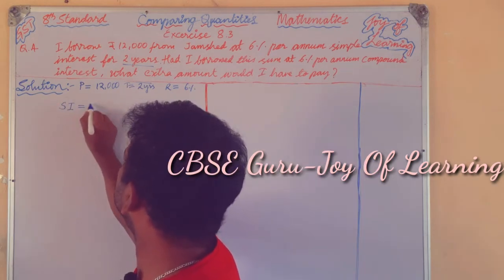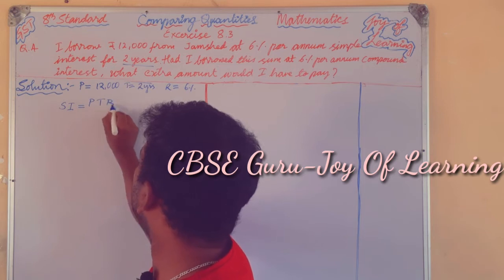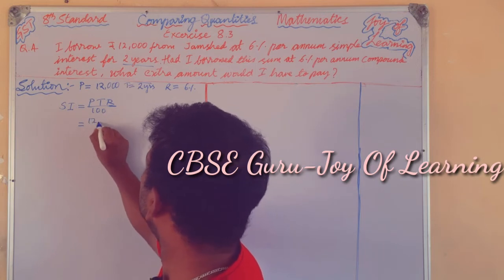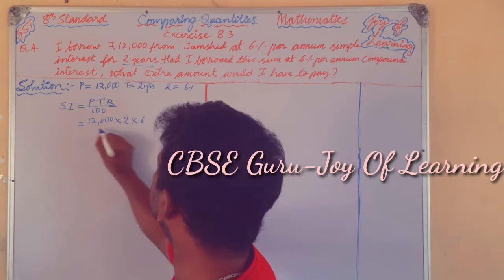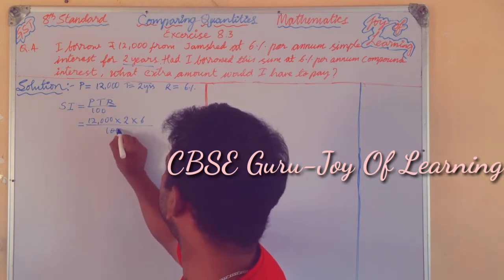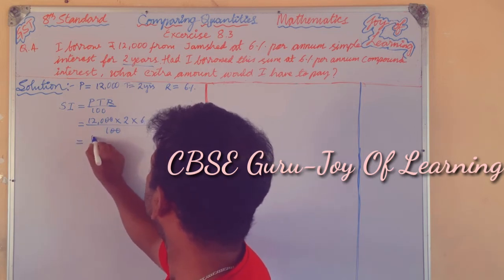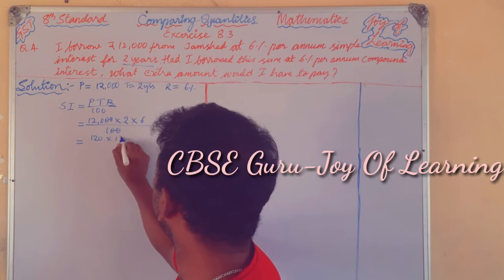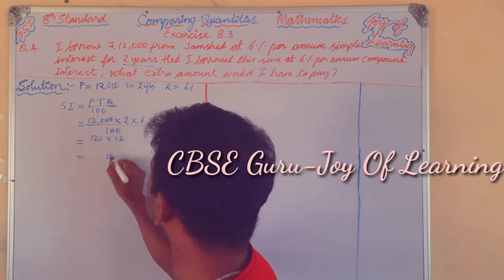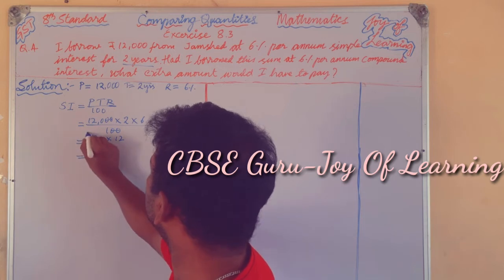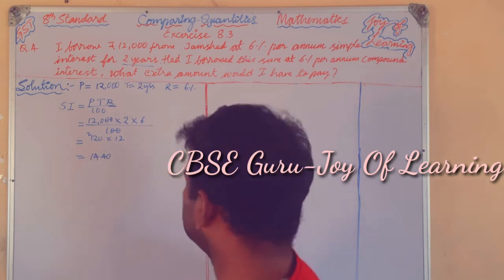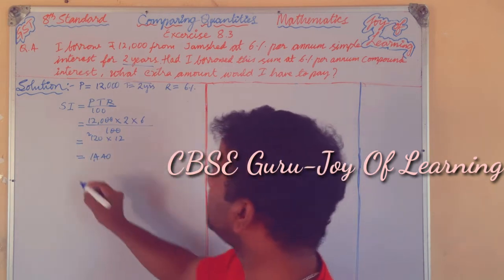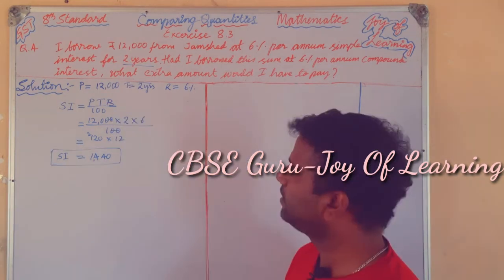Simple interest is equal to PTR divided by 100, where P is the principal. So SI = 12,000 × 2 × 6 divided by 100, which gives simple interest equal to 1,440 rupees.